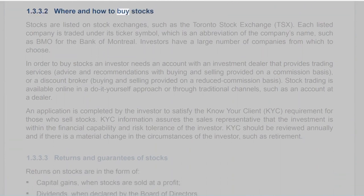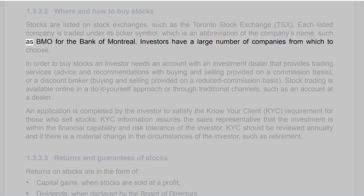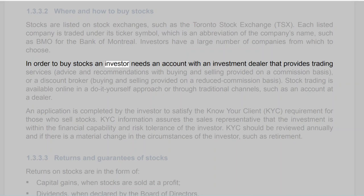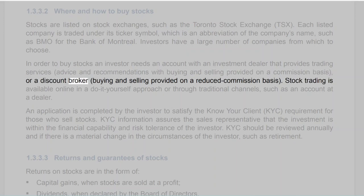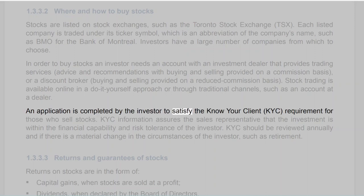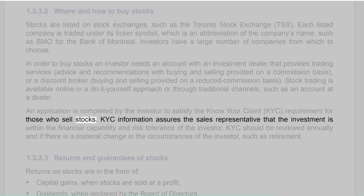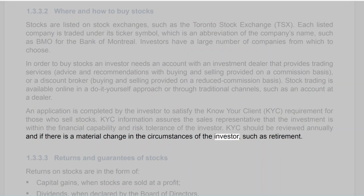Section 1.3.3.2: Where and How to Buy Stocks. Stocks are listed on stock exchanges such as the Toronto Stock Exchange (TSX), and each listed company is traded under its ticker symbol — for example, BMO for the Bank of Montreal. In order to buy stocks, an investor needs an account with an investment dealer providing trading services and advice on a commission basis, or a discount broker on a reduced commission basis. Stock trading is also available online in a do-it-yourself approach. An application is completed by the investor to satisfy the Know Your Client (KYC) requirement, which assures the sales representative that the investment is within the financial capability and risk tolerance of the investor. KYC should be reviewed annually and if there is a material change in circumstances, such as retirement.